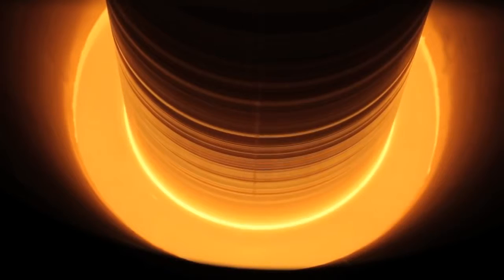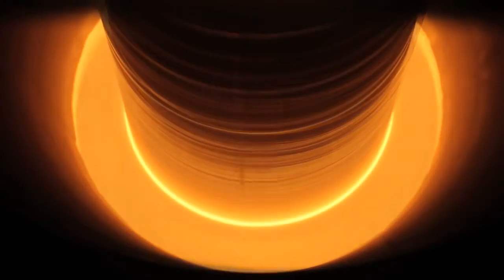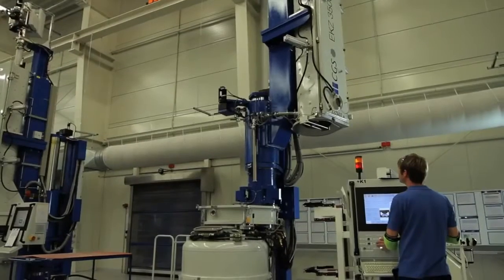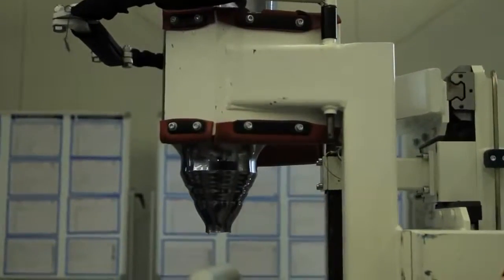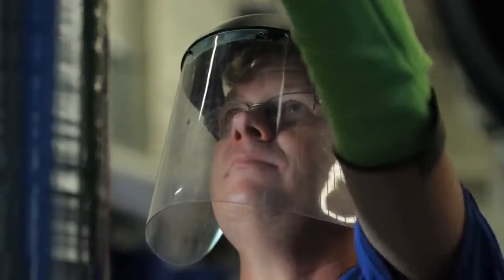At this step in the process, the liquid silicon accumulates on the seed crystal and solidifies. Over four days, a silicon rod of up to 2.8 meters length takes shape.